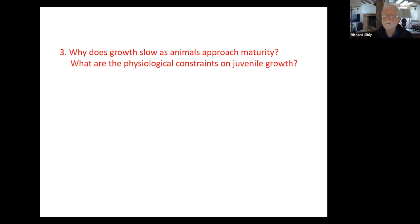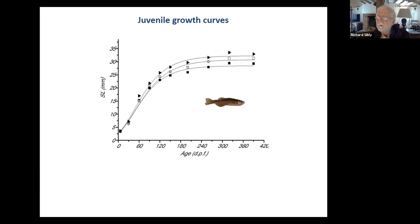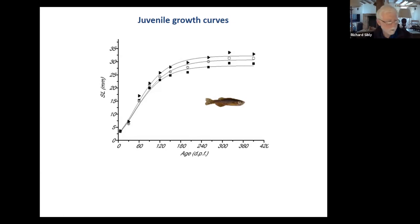For the last part of my talk, I'm going to consider juvenile growth. This is something that has been puzzling me for many years: why does juvenile growth slow as animals approach maturity? What are the physiological constraints on juvenile growth? The curves are almost invariably sigmoid in shape — they go up, almost exponentially to begin with, but then tail off dramatically, taking a long time to reach adult size. Life history theory would predict, in the absence of constraints, exponential growth all the way to adult size — a J curve. You do find exponential growth in caterpillars, but almost all organisms have this sigmoid curve.